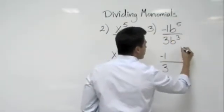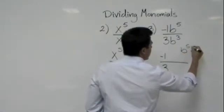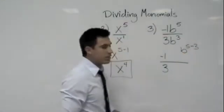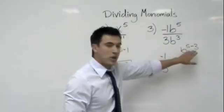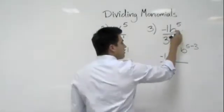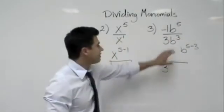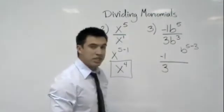So it would be b to the fifth minus three, right? You take the numerator and you subtract the denominator, just the exponent. That's why it's five minus three, because they have the same bases. And it would be b to the second.